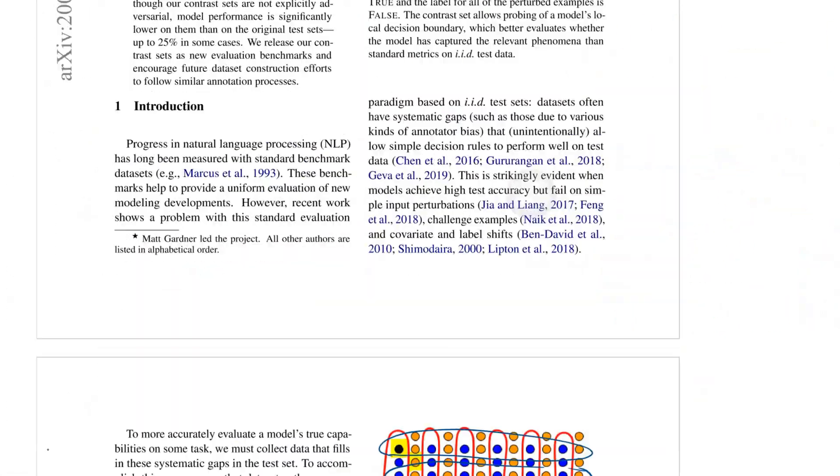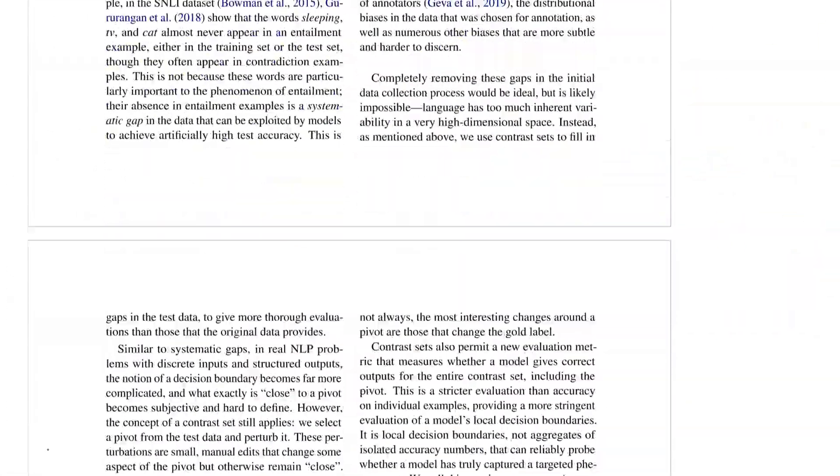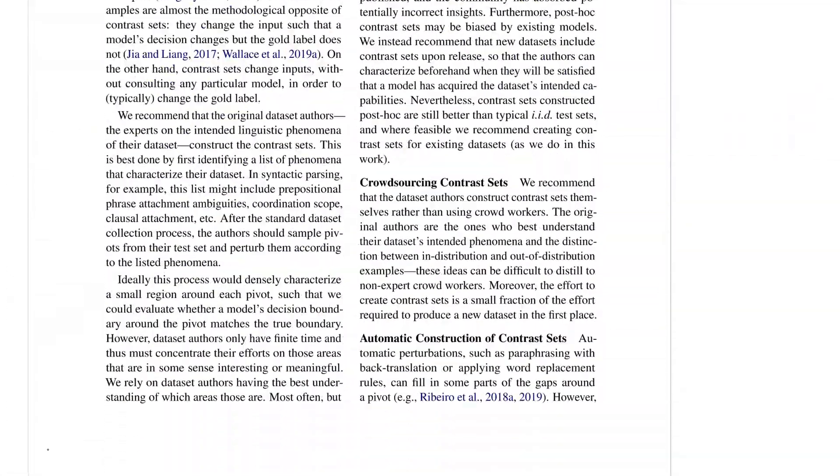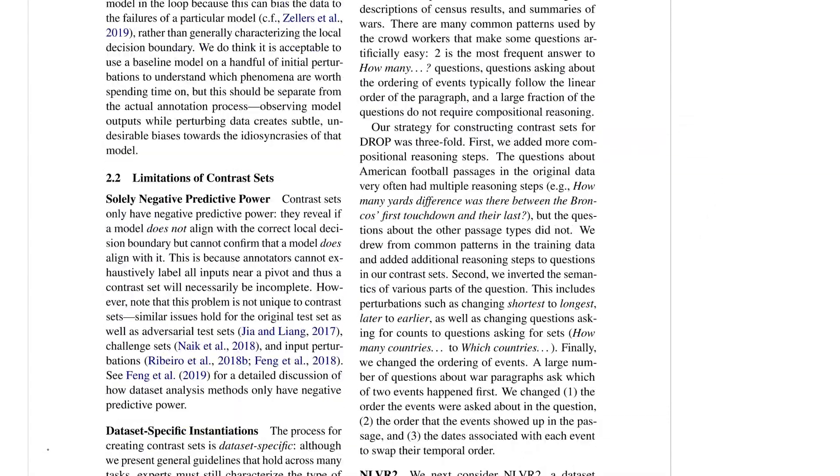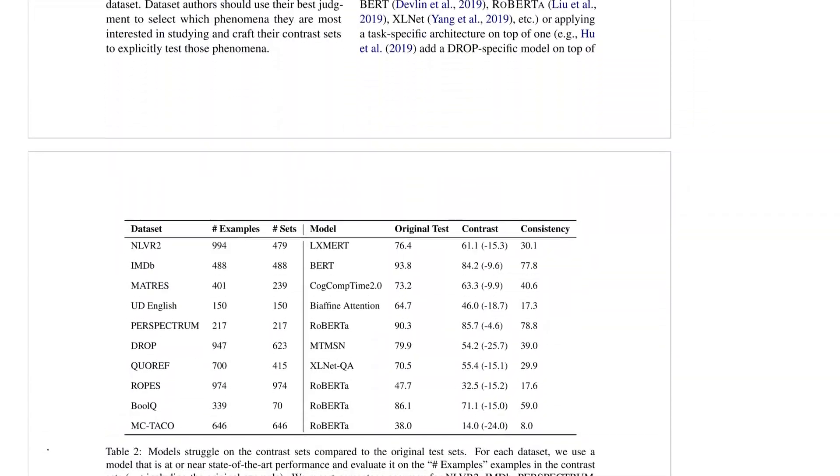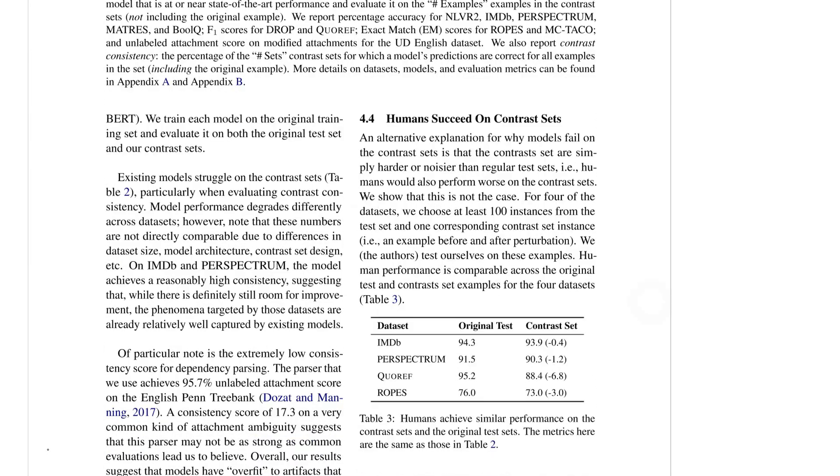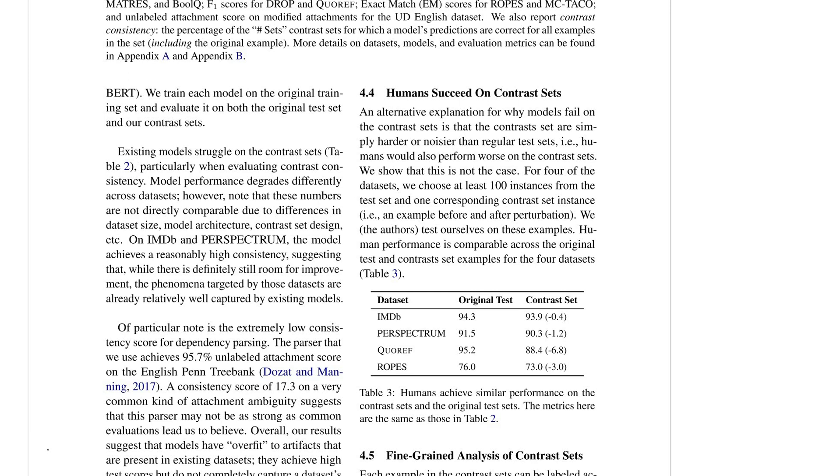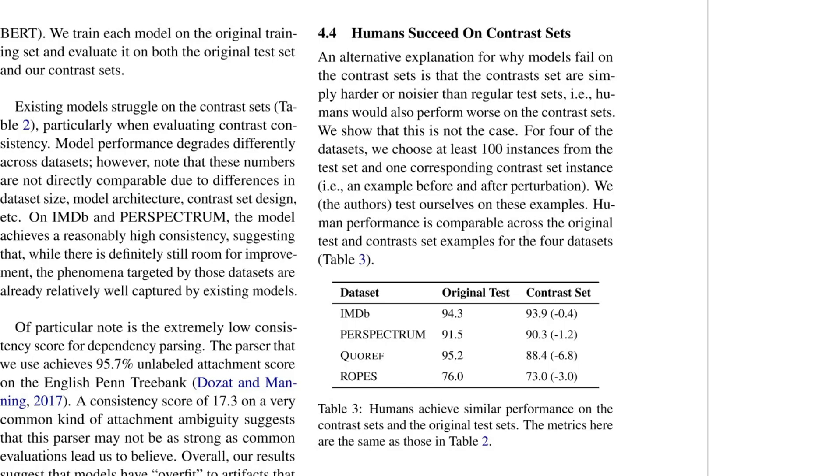All right that was my quarrels with that. I invite you to read the whole paper they actually do this for NLP datasets, it's a lot of work and they show that the models perform much worse on their contrast sets and interestingly the humans don't. The humans are able to solve the contrast set. Of course, of course, because you tell the humans what the task is.